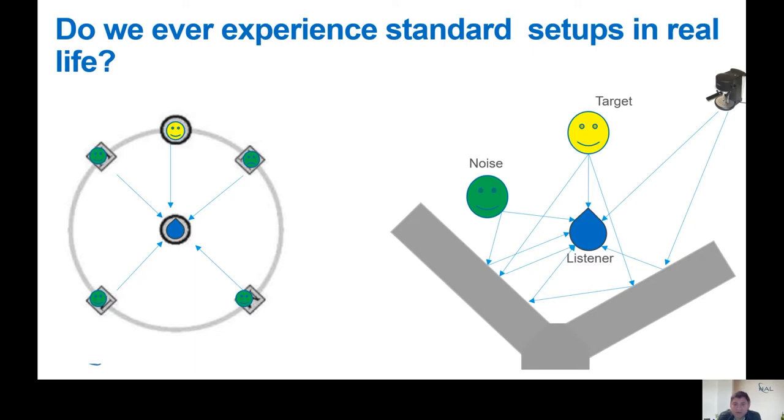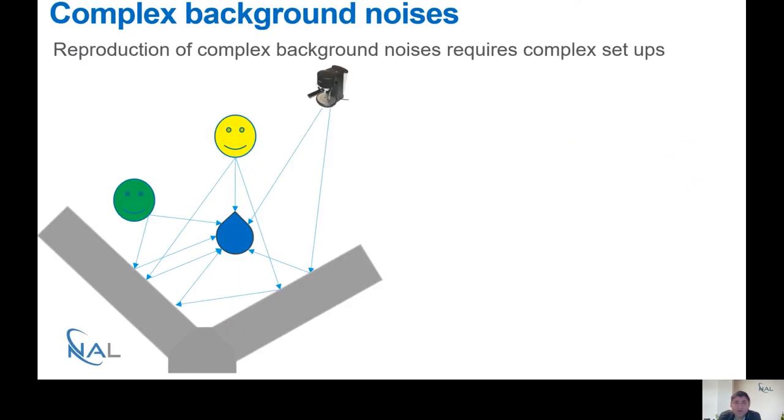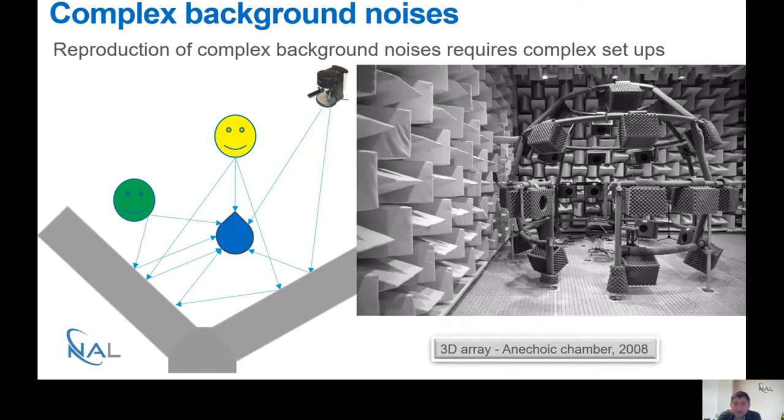Let's compare this against a real-life listening situation. Here we have an illustration of a real-life listening situation with many distant sound sources and near sound sources. In addition to that, we have reflecting surfaces. So what we observe is that the acoustic characteristics of a real-life listening condition are complex in comparison to the standard condition. The question is, how do we go about reproducing these complex acoustic characteristics in the laboratory?